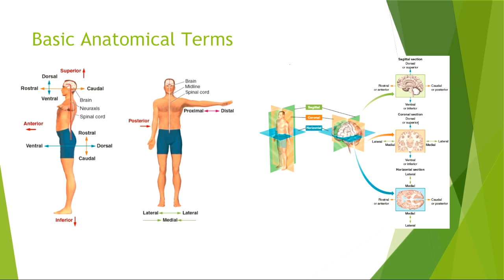Now we have something called the neuraxis. Very simple: draw a line through the middle of your spine and through the middle of your brain. The brain has two hemispheres, so you can draw a line straight through them — cleave the brain in half. That is the neuraxis. All of these terms are relative to that. Some brain areas go towards the side of the brain; other areas are more towards the center. Any part of the brain towards the side we call lateral, and any part towards the center we call medial.